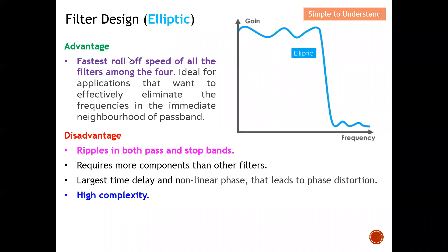Advantages and disadvantages of the Elliptic filter: it has the fastest roll-off speed of all four filters. It is ideal for applications that want to effectively attenuate frequencies in the immediate neighborhood of the pass band. However, there are ripples in both pass and stop band. They require more components than other filters. They have the largest time delay and non-linear phase, which leads to phase distortion. The filter design using Elliptic is also the most complex to implement.